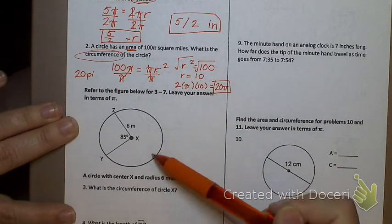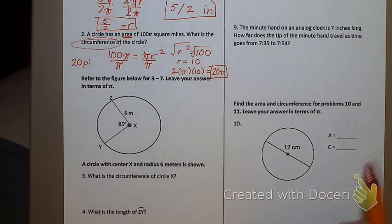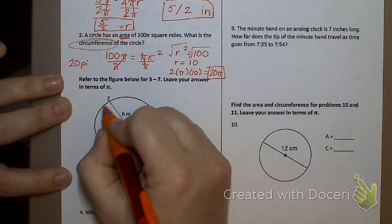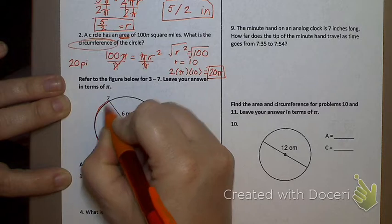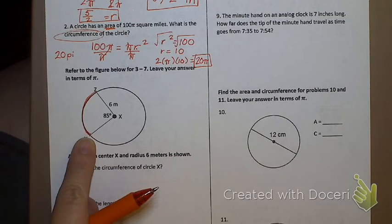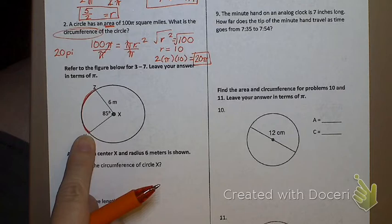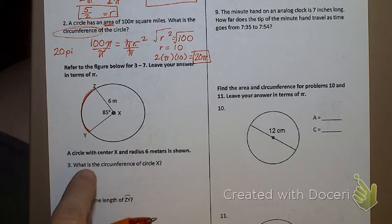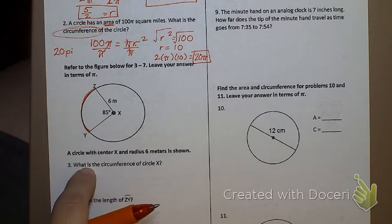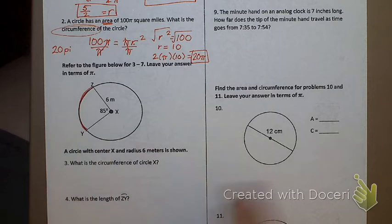Refer to this figure for numbers 3 through 7 — leave your answer in terms of pi. One cautionary note for your test: we are going to have pictures, and the arc may be darkened, but it might not be asking for arc length. You have to read the instructions, because your picture may look like this but it might be saying find the area of the circle. We use the same image for several questions — find the area, find the sector area, find the arc length — so read the directions to make sure you're finding the correct thing.